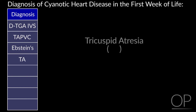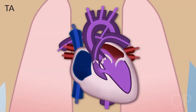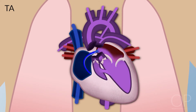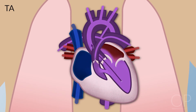Tricuspid atresia: the tricuspid valve never forms. The right ventricle is either very small or nonexistent. Blood comes back to the body into the right atrium, can't get through here, and goes across the foramen ovale into the left atrium, left ventricle, out the aorta, to the body.